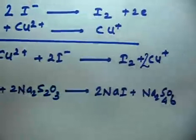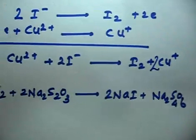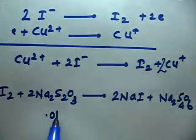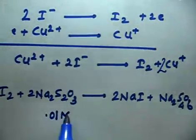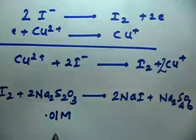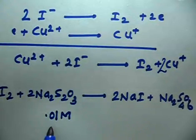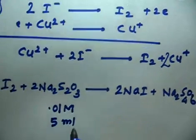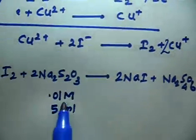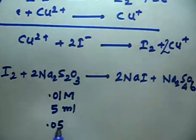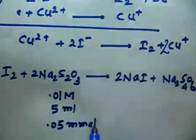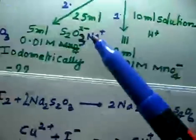Now the question gives us moles of Na₂S₂O₃: volume is 5 ml at 0.01 M, so moles = 5 × 0.01 = 0.05 millimoles. From the reaction I₂ + 2Na₂S₂O₃, moles of I₂ = 0.05 ÷ 2 = 0.025 millimoles in 25 ml. To find moles of I₂ in 1 liter, divide by 25 and multiply by 1000. From 2Cu²⁺ + 4I⁻ → I₂ + 2Cu⁺, moles of Cu²⁺ = 2 × moles of I₂.